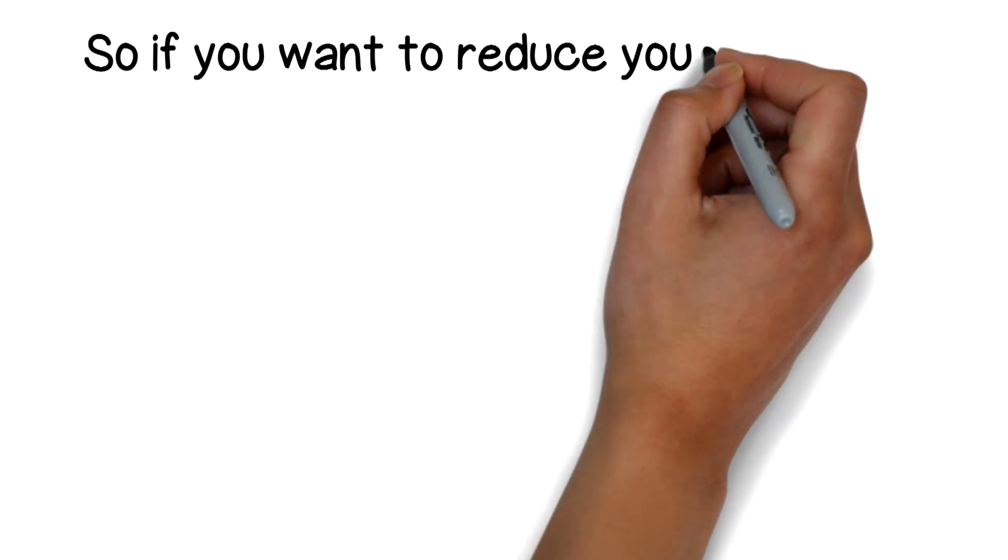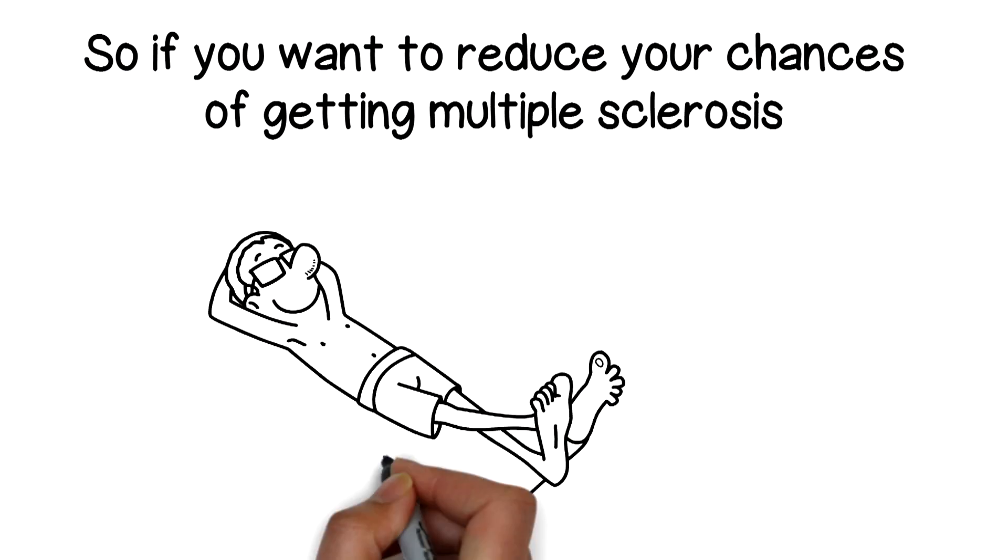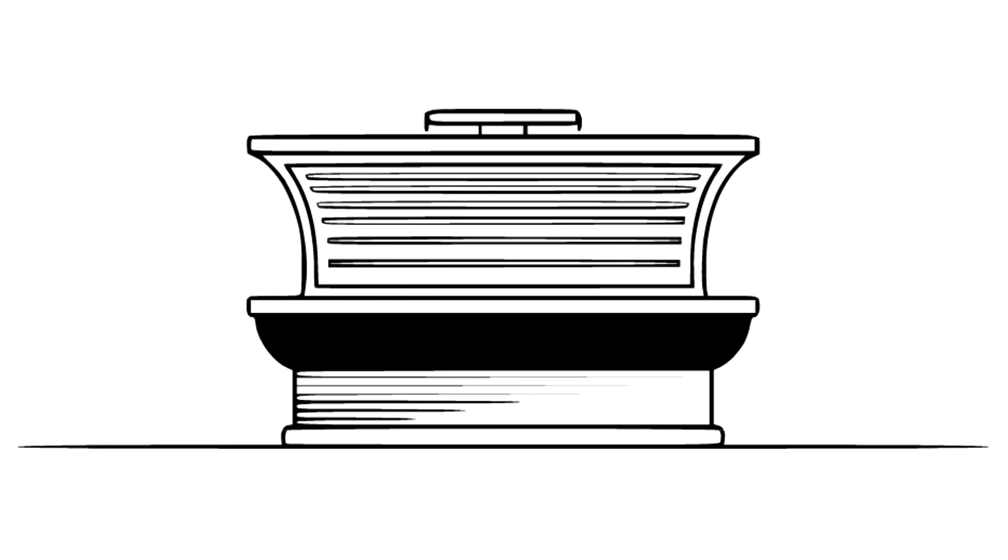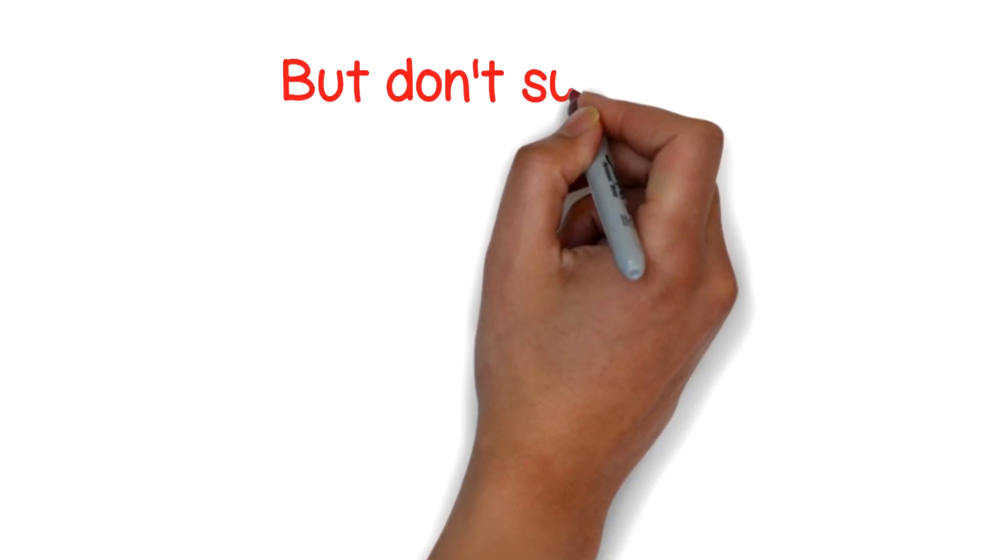So if you want to reduce your chances of getting multiple sclerosis, go out in the sun at midday during summer and consider using a sunbed with UVB similar to summer sun when the UV index is low. But don't sunburn.